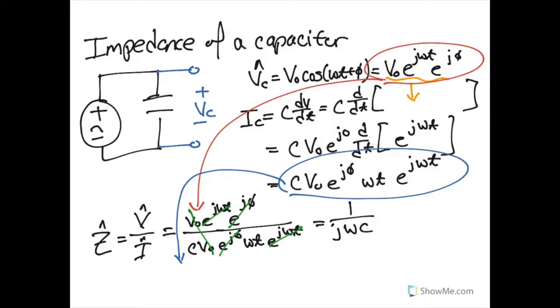So one mistake that is in here is that when the derivative of this was taken, this should have been jwj instead of wt. We'll just go ahead and fix that with our magic pen, and this is our final expression for the impedance of a capacitor.